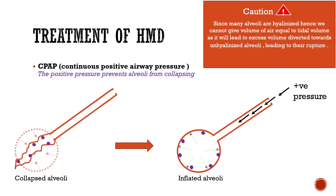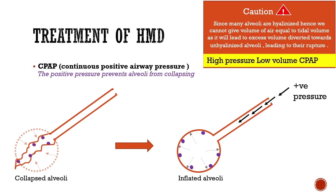An important consideration: since many alveoli are already hyalineized and overall lung volume is decreased, we cannot give a volume of air equal to normal tidal volume, as it may lead to excess volume directed toward unhyalineized alveoli, causing their rupture. Therefore, CPAP is set on high pressure and low volume.